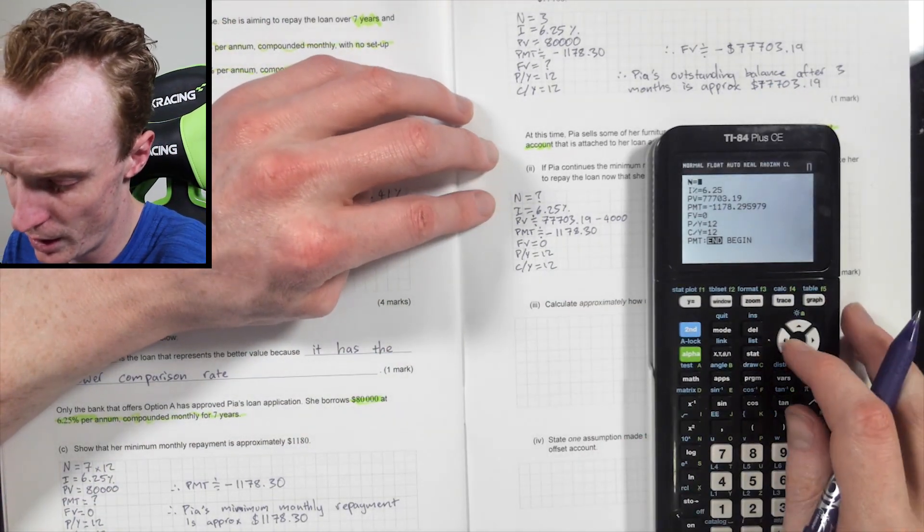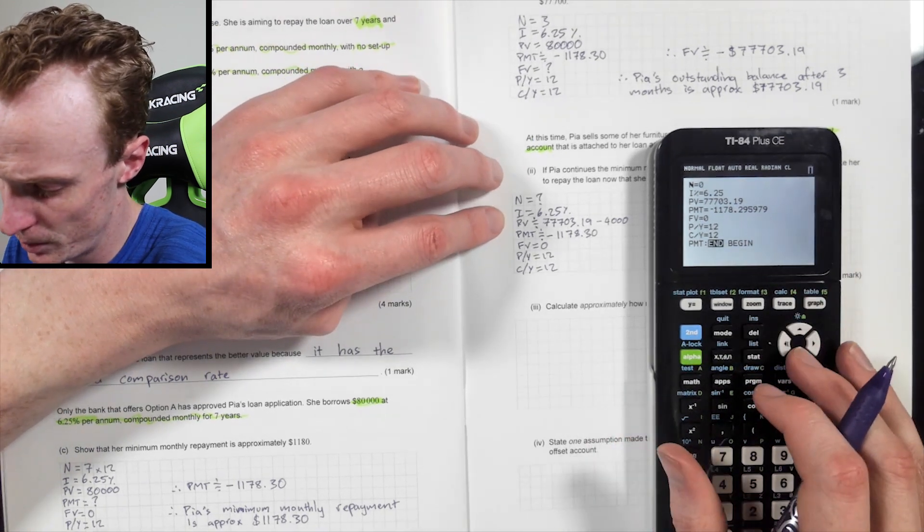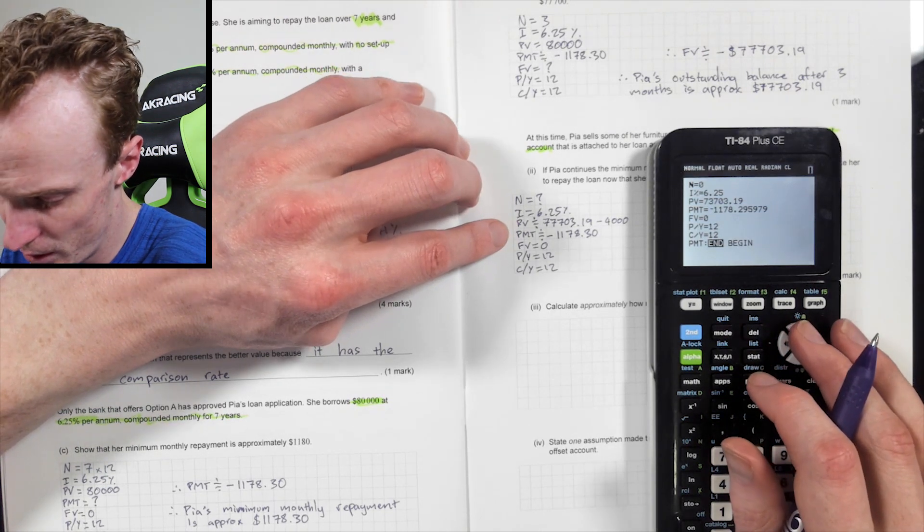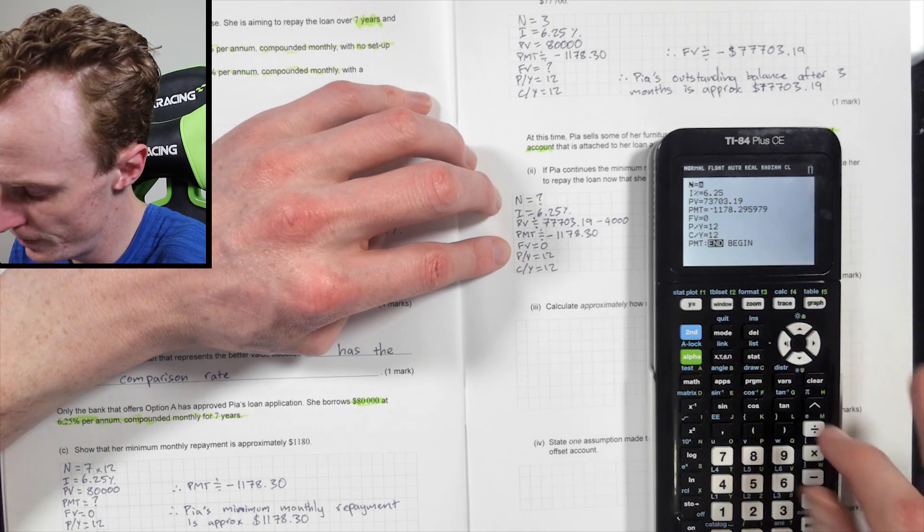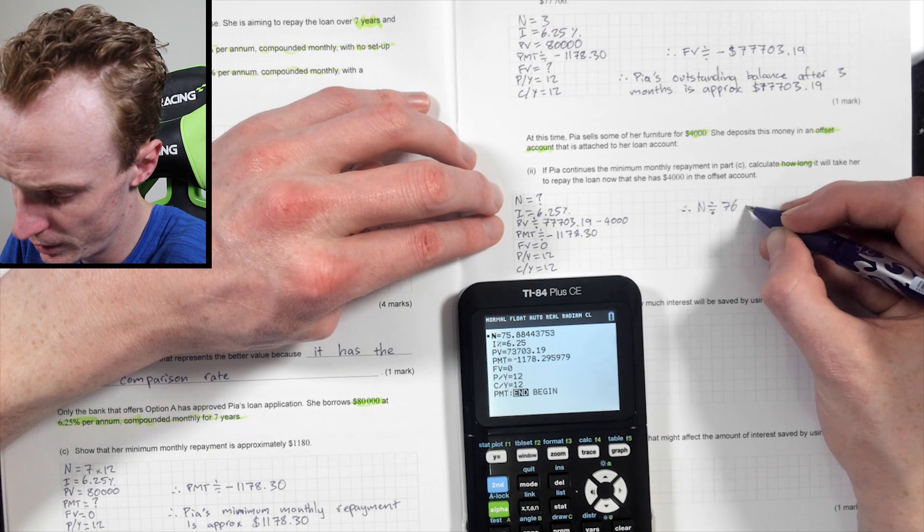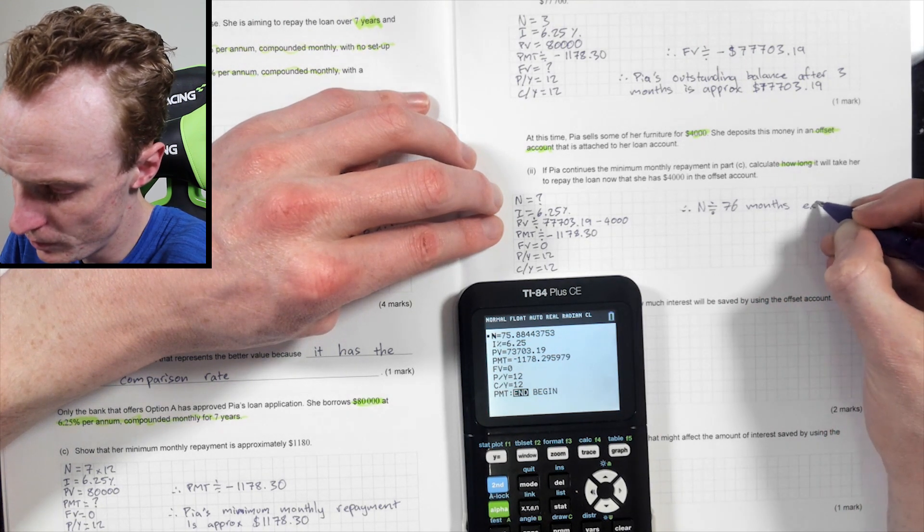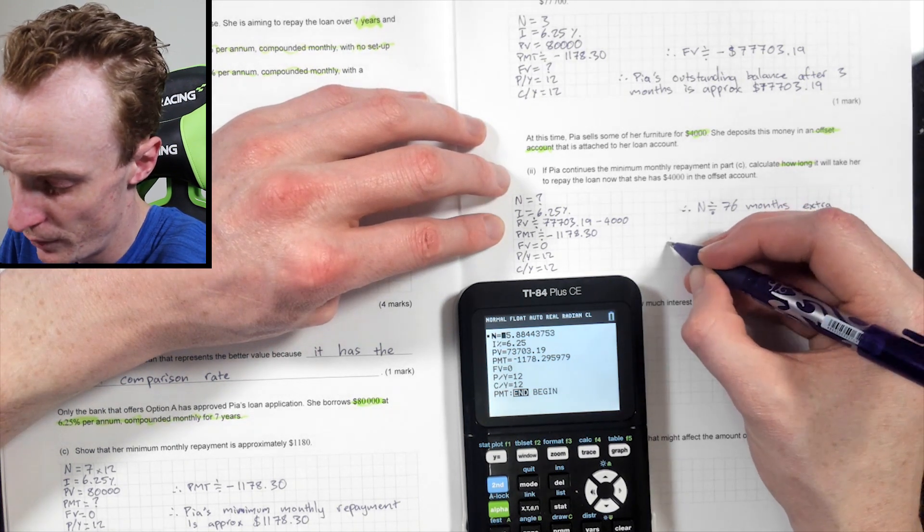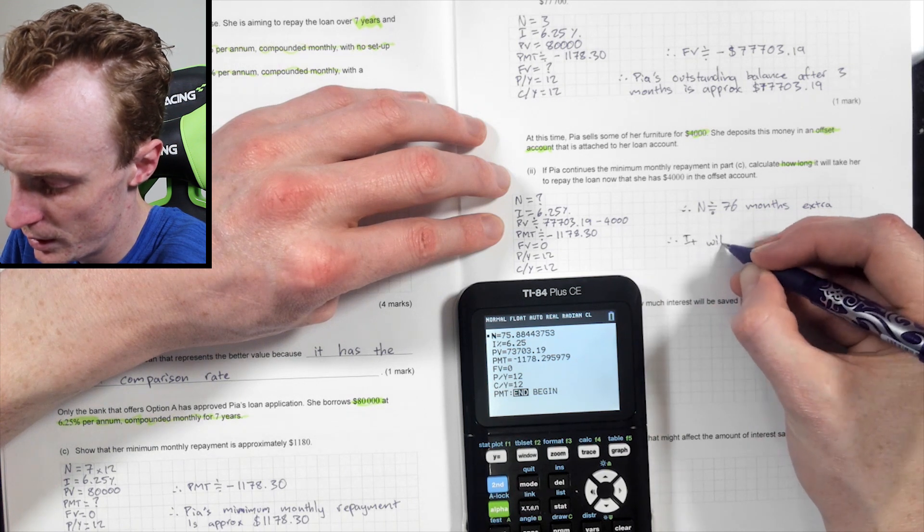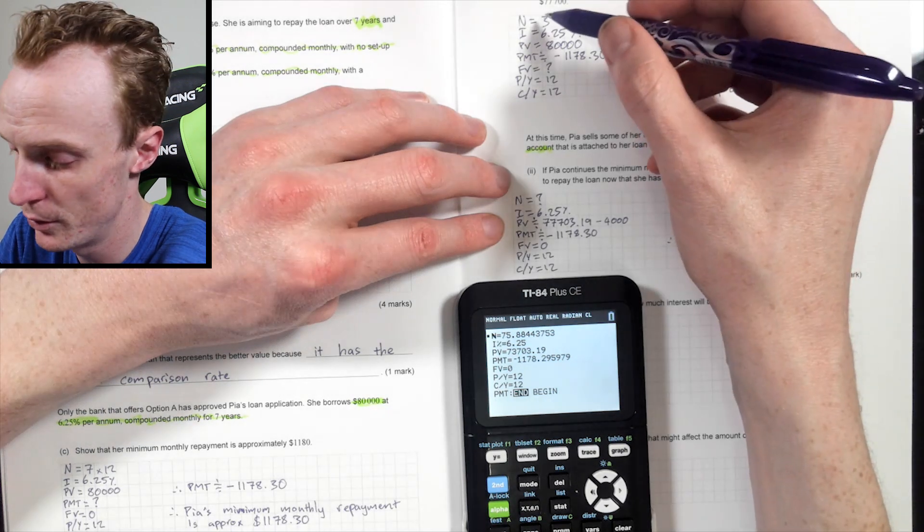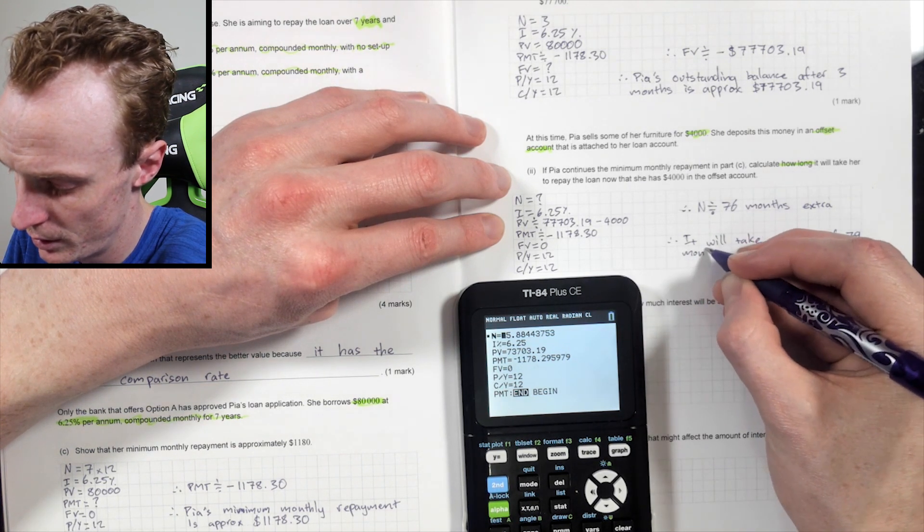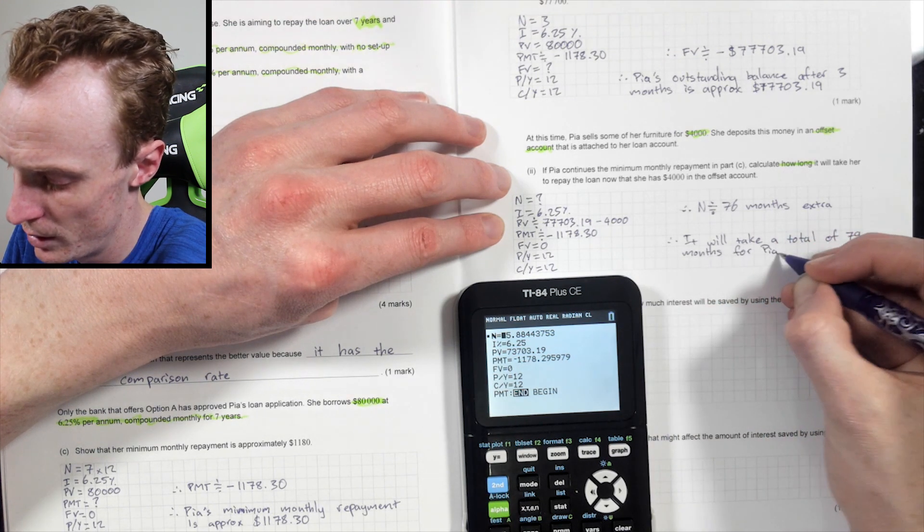Alright. So let's now put it all into my calculator. So I'm looking at finding my N, so I don't know my N. My interest rate is 6.25. My present value is that, but subtracting my 4,000. My PMT is what it is. Future value zero. Yep. That's fine. So when we do that, my N is going to be approximately 76 months, you can see. So 76 months extra. So it'll take 77 months total. So therefore, it will take, not 76 plus the three. So 79, a total of 79 months to repay the loan.